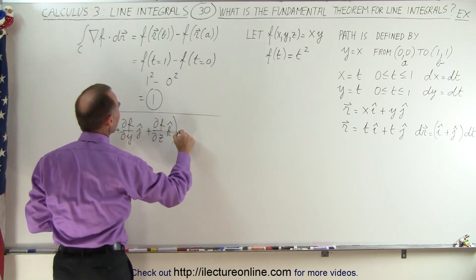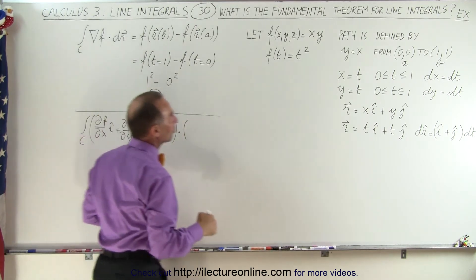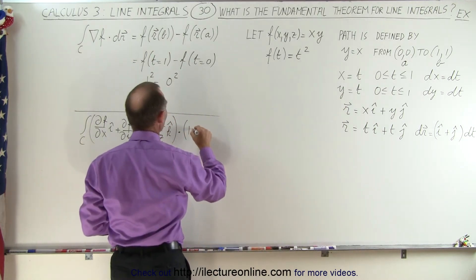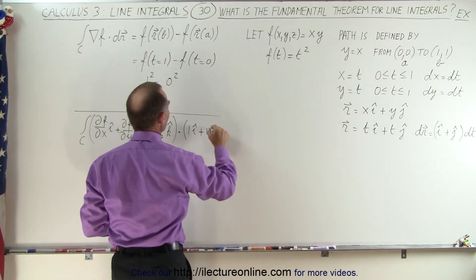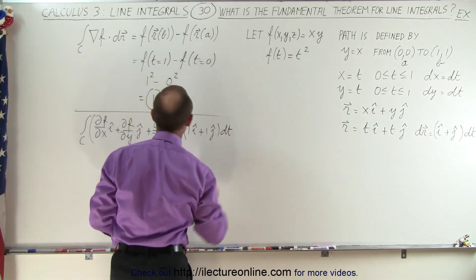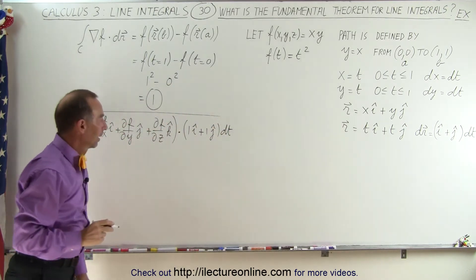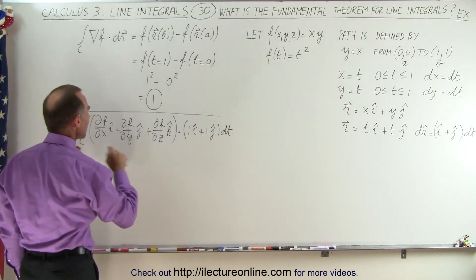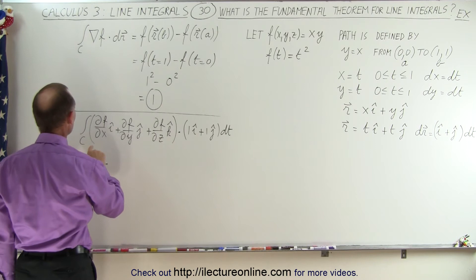And we're going to do the dot product with dr, which is defined right here. dr is defined as 1 times i plus 1 times j times dt. And of course, when we integrate that, since we're now going to define things in terms of t, we'll see that in just a moment.